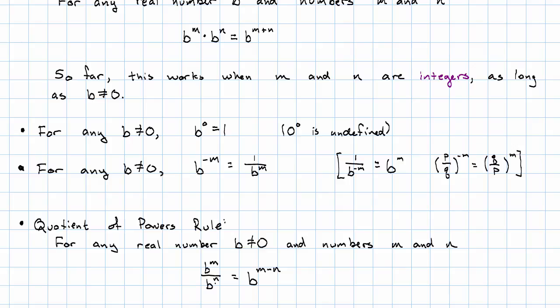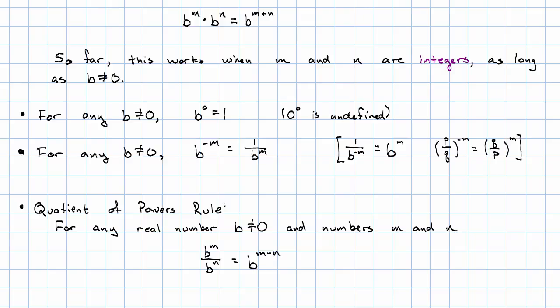And again, we ruled out b being 0, because we can't have a 0 in the denominator. We used this primarily when we were doing arithmetic in scientific notation.